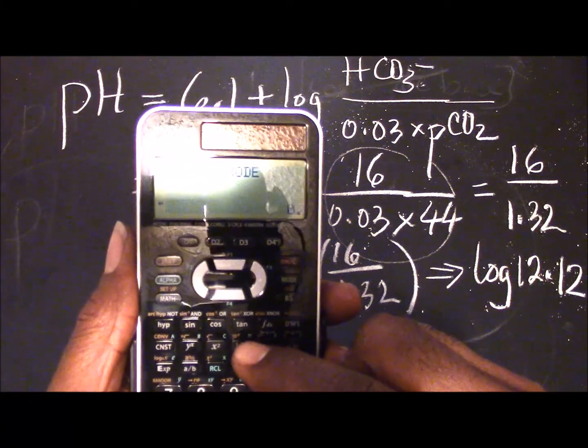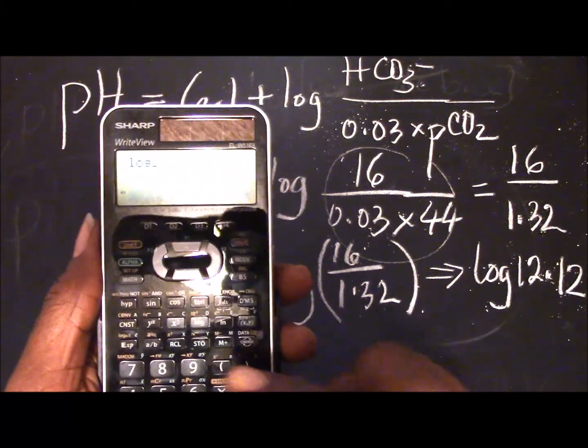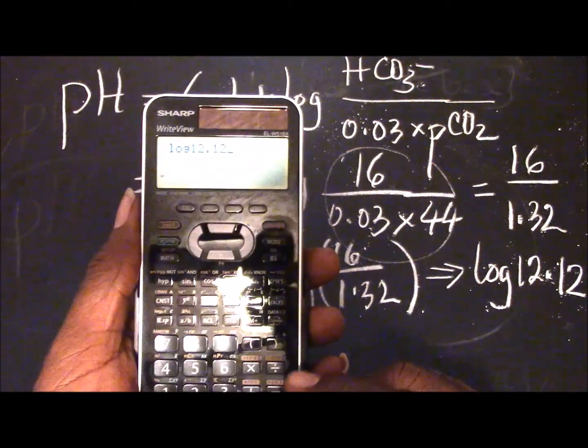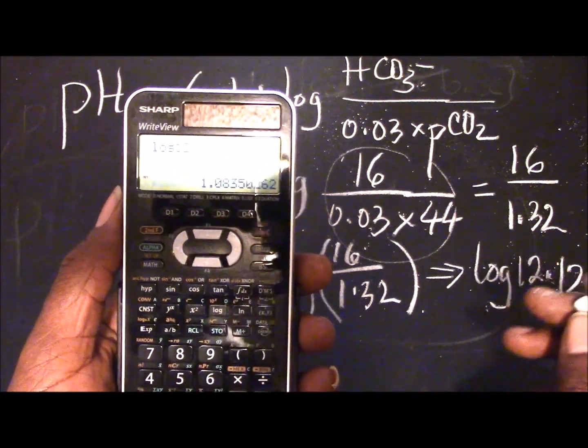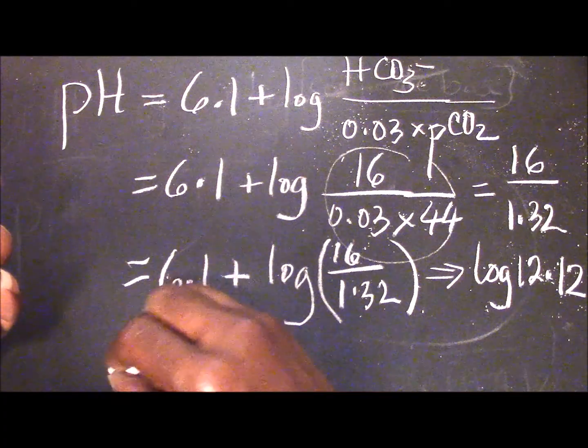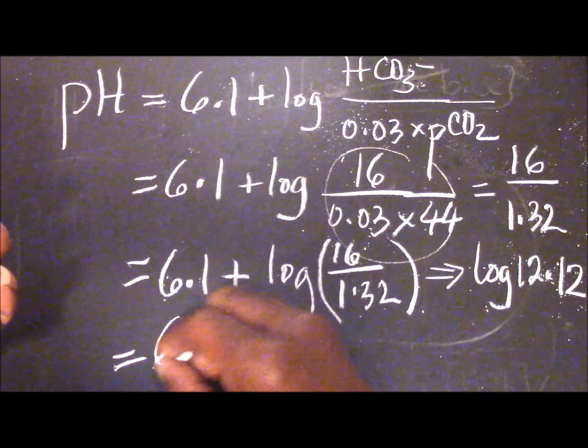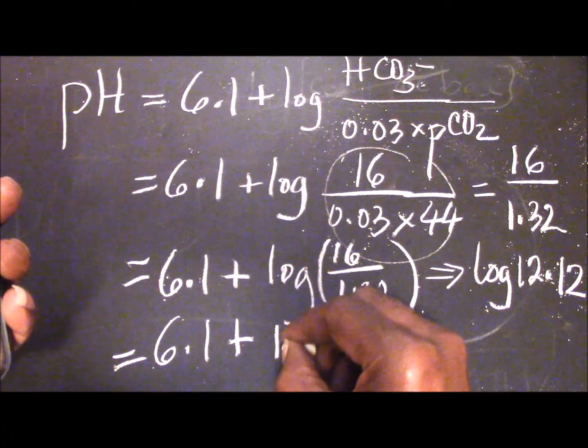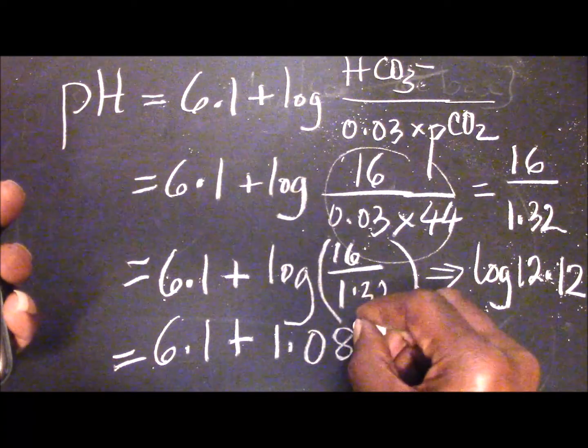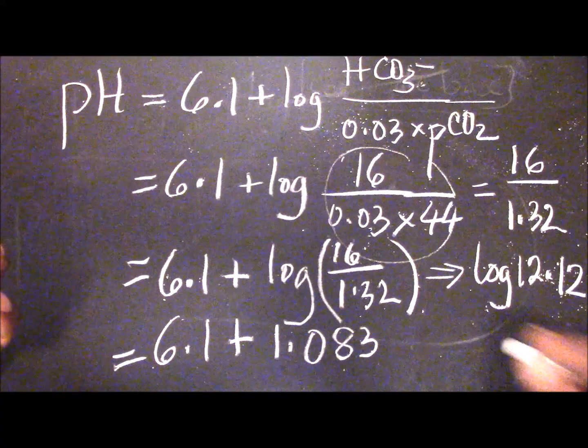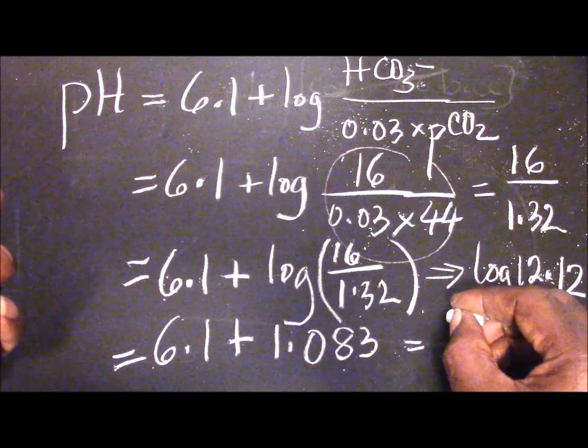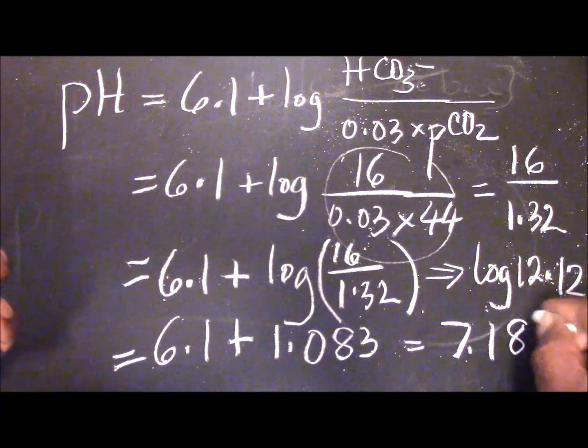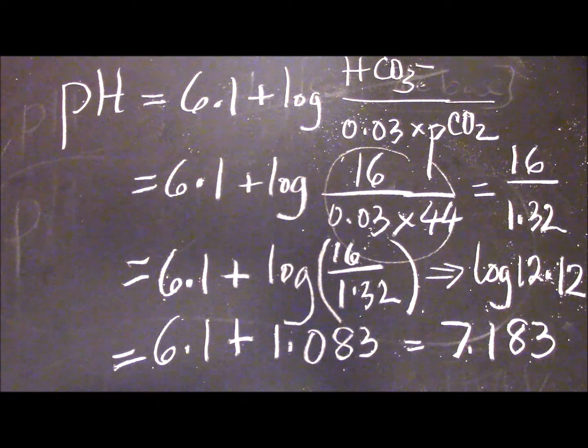Now you will use the log key: log 12.12, and that gives you 1.083. So what you have now will be finally 6.1 plus 1.083, and when you add that up you will get 7.183. And that is the pH you are required to calculate.